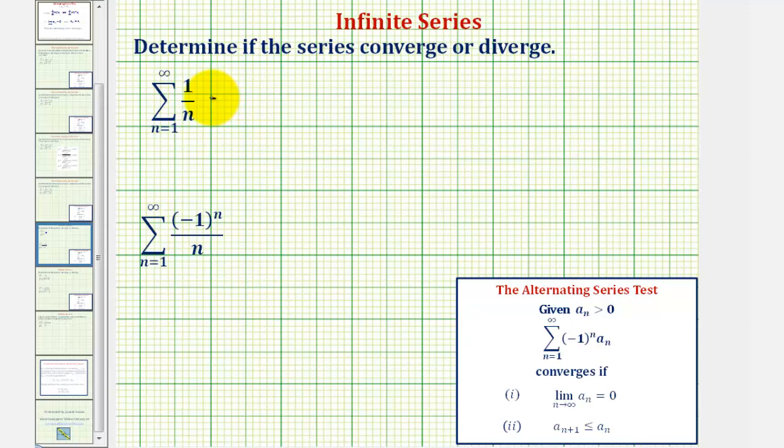Notice how when n is one, we would just have one, plus when n is two, we'd have one-half, plus when n is three, we have one-third, when n is four, we have one-fourth, and so on. So we should recognize this as a harmonic series, which does diverge.